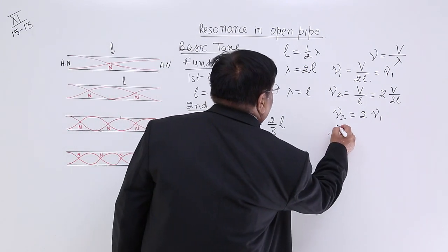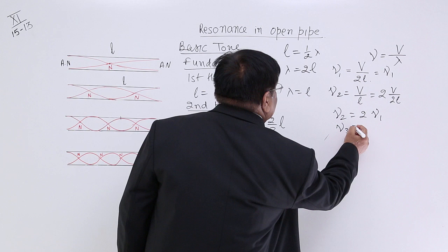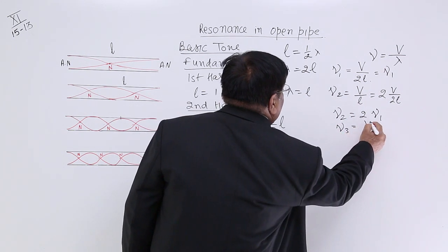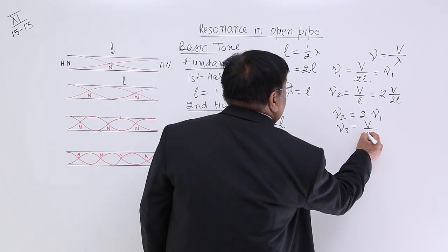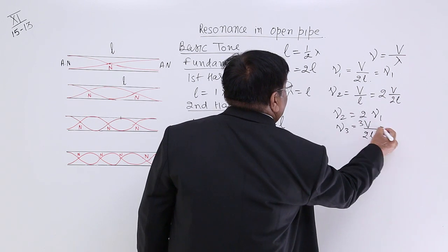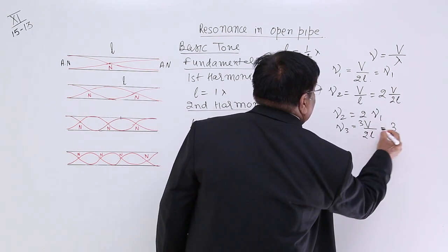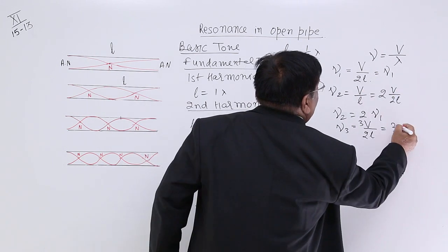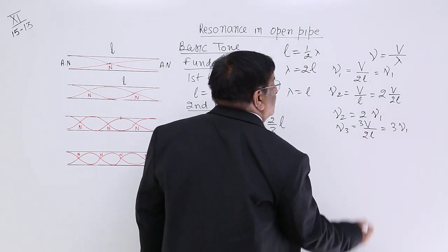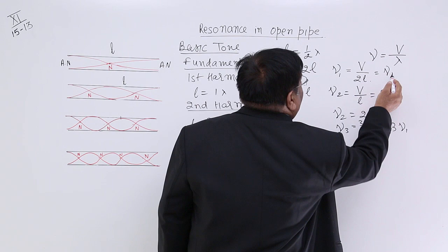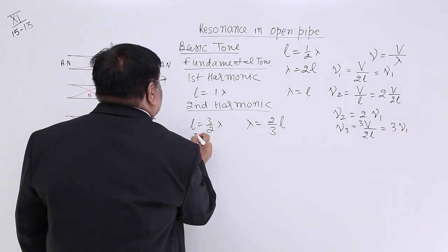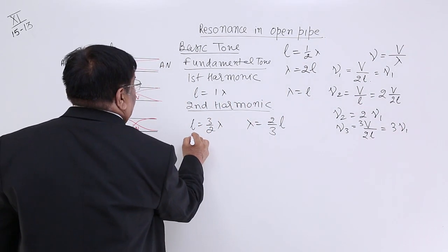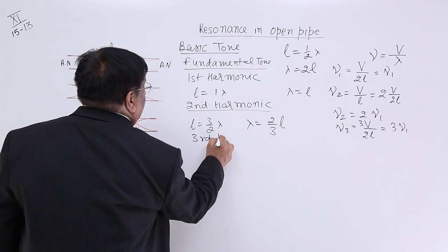So how much is the third frequency? This is equal to V upon 2L upon 3. This is 3 into V upon 2L is equal to nu1. So this is 3 times the first harmonic, so we call it third harmonic.